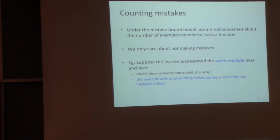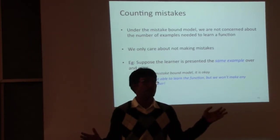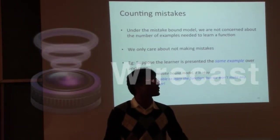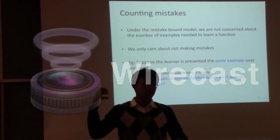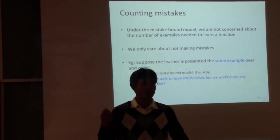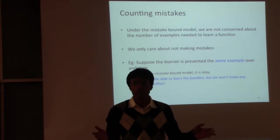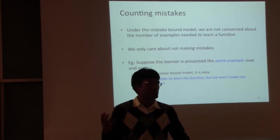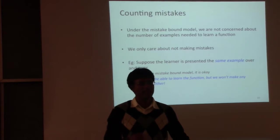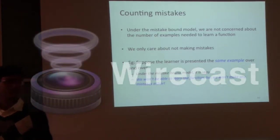I just wanted to clarify a few things about the mistake-bound model — all they are doing is counting mistakes. We really don't care whether we learn the function or not. All we want to do is not make too many mistakes. In the worst case, we have no control over the sequence in which examples are presented to us. The same example could keep coming back again and again, and that's okay because we are not going to make any more mistakes.